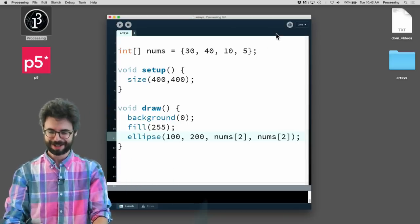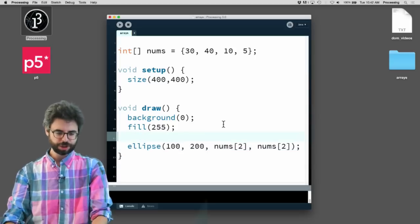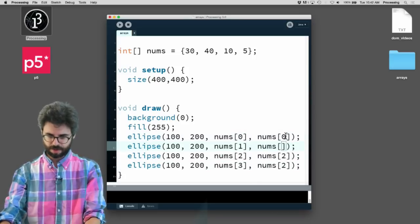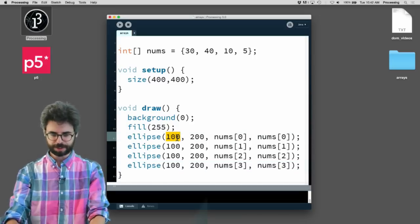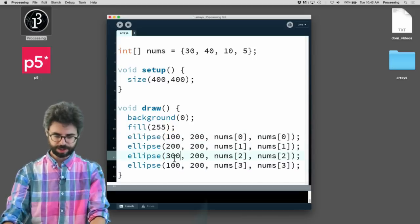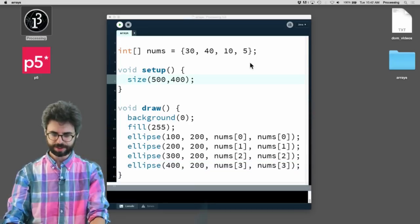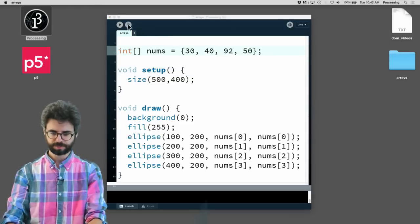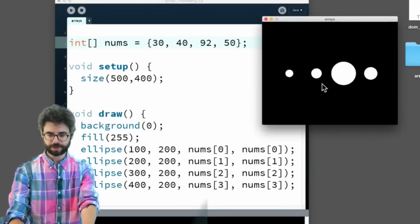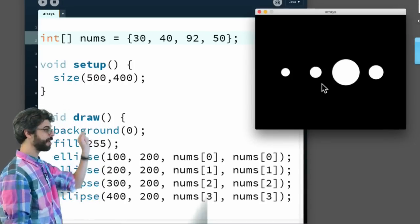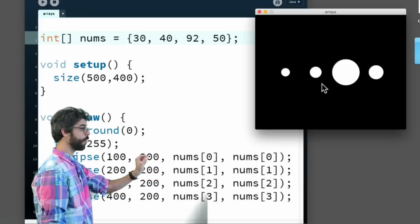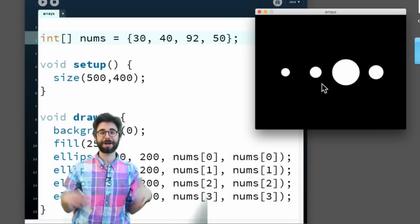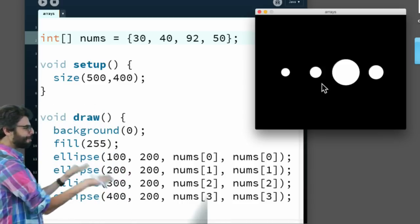If I change this to nums index two, now I've got a tiny one. Let's draw a circle with all of those. There are four elements: 0, 1, 2, 3. Let's draw them spaced out at 100, 200, 300, 400, and I'll make the size 500. Let's make these numbers a little bit bigger: 50, 92. I've got four circles at different x values. Each circle is pulling its width and height from that array: index 0, index 1, index 2, index 3. This is working pretty well. Instead of having four separate variables, I have a single variable with a list of four items. But I still have to have four lines of code down here, which is kind of ridiculous.